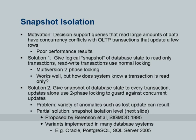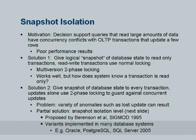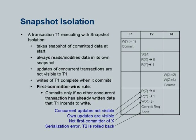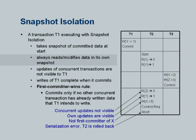Why is snapshot isolation popular? Reads never block. Performance is very close to read committed because blocks are very rare, except that there are more rollbacks. Snapshot isolation claims to be read committed because it only reads committed values. It also claims repeatable read because if you read the same value again you get the same answer from the snapshot. But it does not prevent all phantom problems, and it does not always give serializable execution.